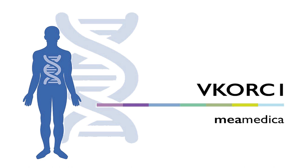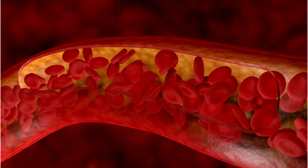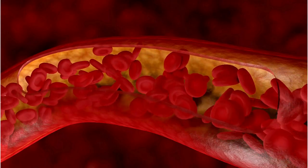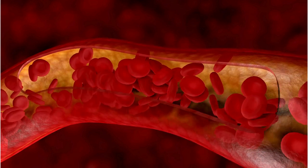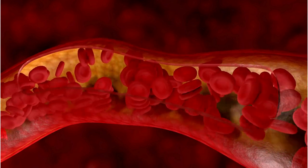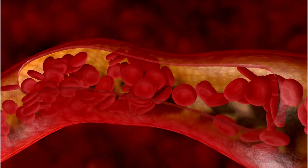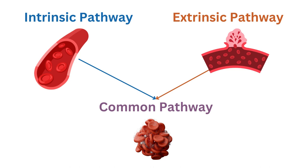The coagulation cascade is a series of biochemical reactions that occur in the body to stop bleeding by forming blood clots. It involves a complex interplay of various proteins known as clotting factors. The cascade is typically divided into two pathways, the intrinsic pathway and the extrinsic pathway, which converge at a common pathway to ultimately form a stable blood clot.